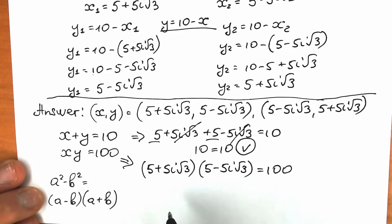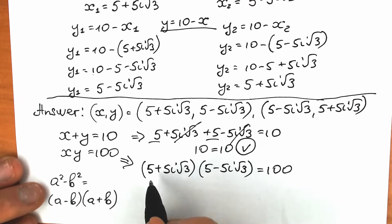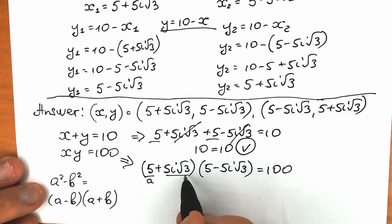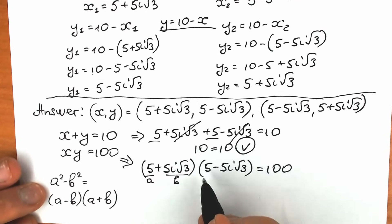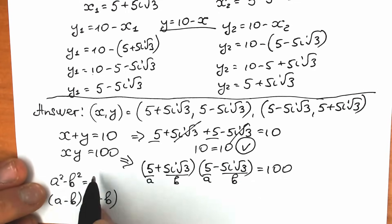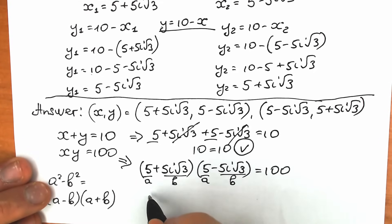Here a equals 5 and b equals 5i√3. So this expression is our difference of two squares: 5 squared minus (5i√3) squared.